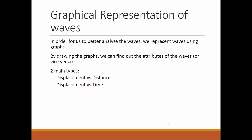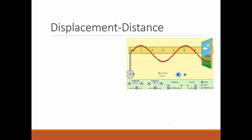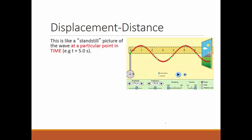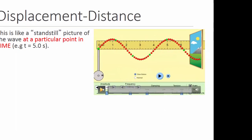There are two main types: displacement versus distance, and displacement versus time. Let's look at the first type. Displacement versus distance is just like a standstill picture of the wave at a particular point in time — say, maybe time equals 5 seconds.